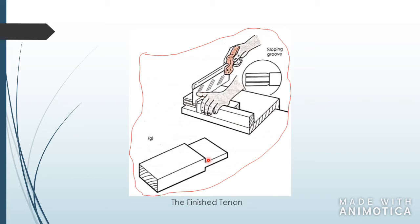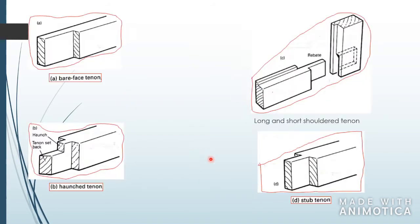If you watch the previous video, which I suggest you watch before this one, you want to mark what you don't need with an X. Make sure you mark your pieces because sometimes you can end up cutting the wrong piece if you don't mark it. Here you have the bare face tenon, the haunched tenon, the long and short shoulder tenon, and the stub tenon. You can look at them and learn the differences.